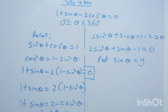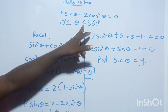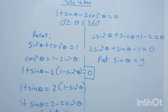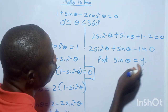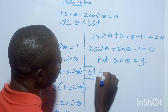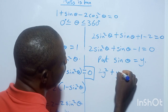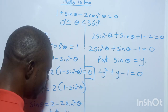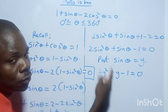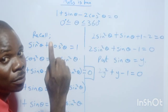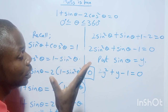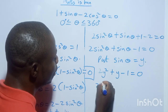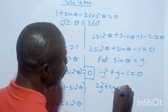We are looking for the value of θ that is greater than 0° but less than 360°. Since we're solving for sinθ, let's substitute y = sinθ. So we have 2y² + y − 1 = 0. We factor this out by finding two numbers that add to give +1.